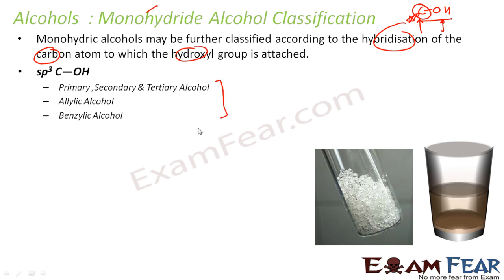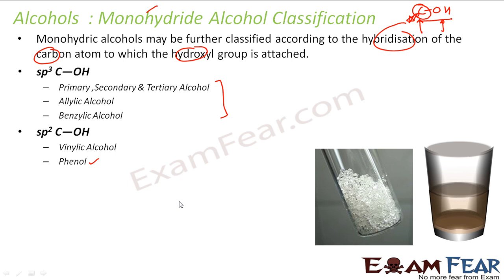We will discuss about these in the next few slides. If this carbon is sp2 hybridized carbon, then we have vinylic alcohol and phenols. There are two different definitions actually. According to one definition, phenol is a type of alcohol, and the other says that alcohol is only for aliphatic and phenol is for aromatic.